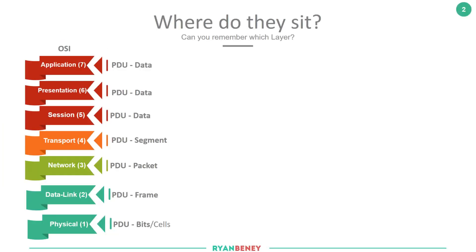For those who have been following the video series, we've just finished a good overview of the Open System Interconnect model and had a discussion around the seven layers. TCP and UDP are two protocols that work at a particular layer — Layer 4, which is the transport layer. Remember that the PDU, the protocol data unit at the transport layer, is referred to as a segment.